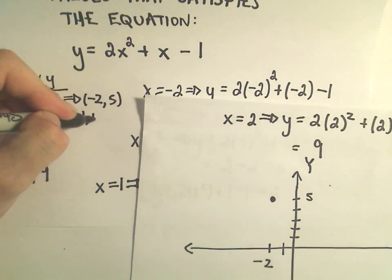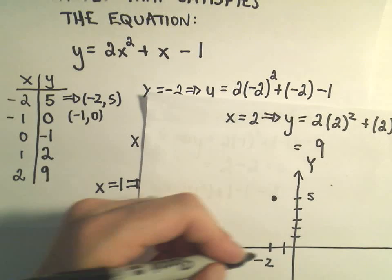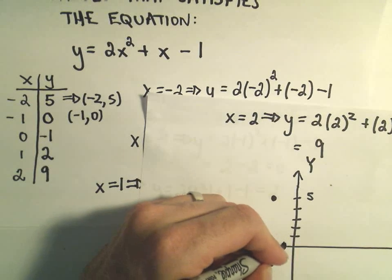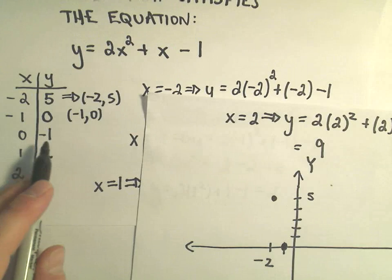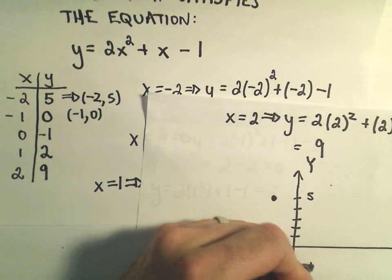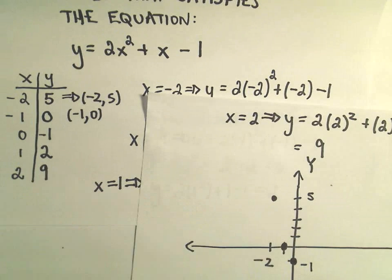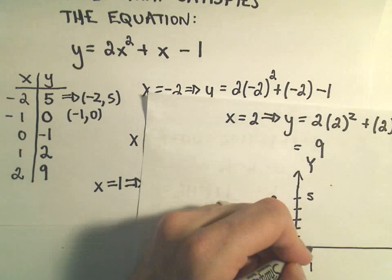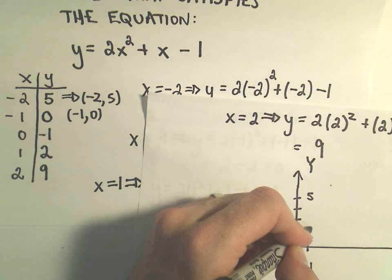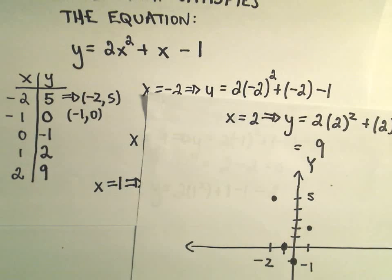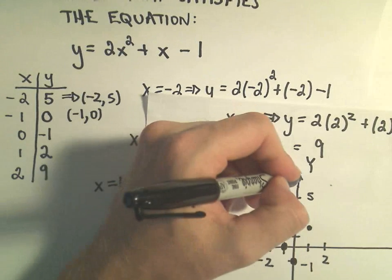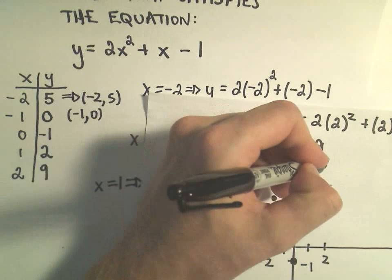So that means the point negative 1, 0 is on the graph. So negative 1, 0 would be on the x-axis, 1 unit to the left. We get 0 negative 1 out, so that'll be another point on the graph. And then when you plug 1 in, we get 2 out. And when you plug 2 in, you get positive 9 out, so we'll be a bit further up.